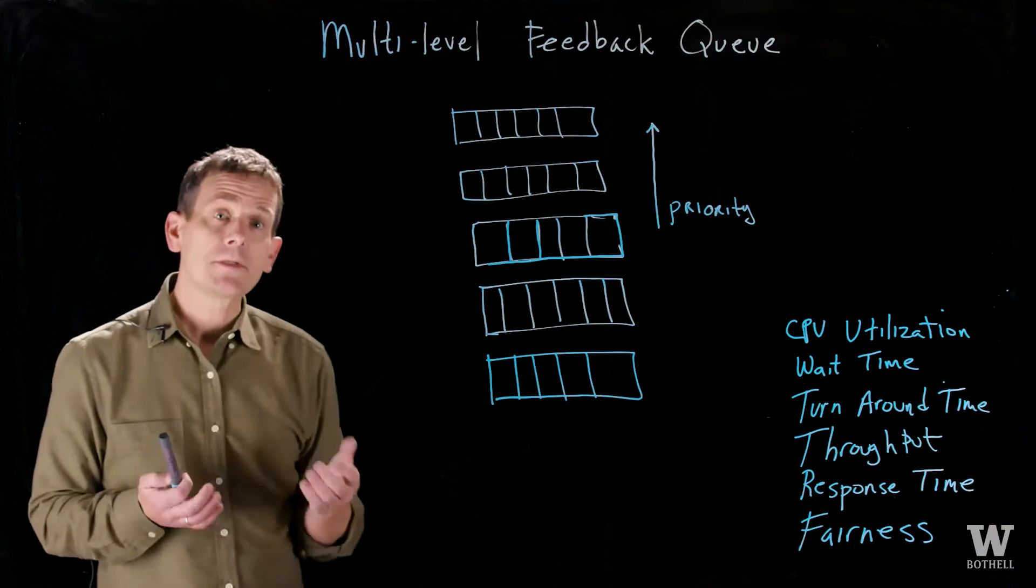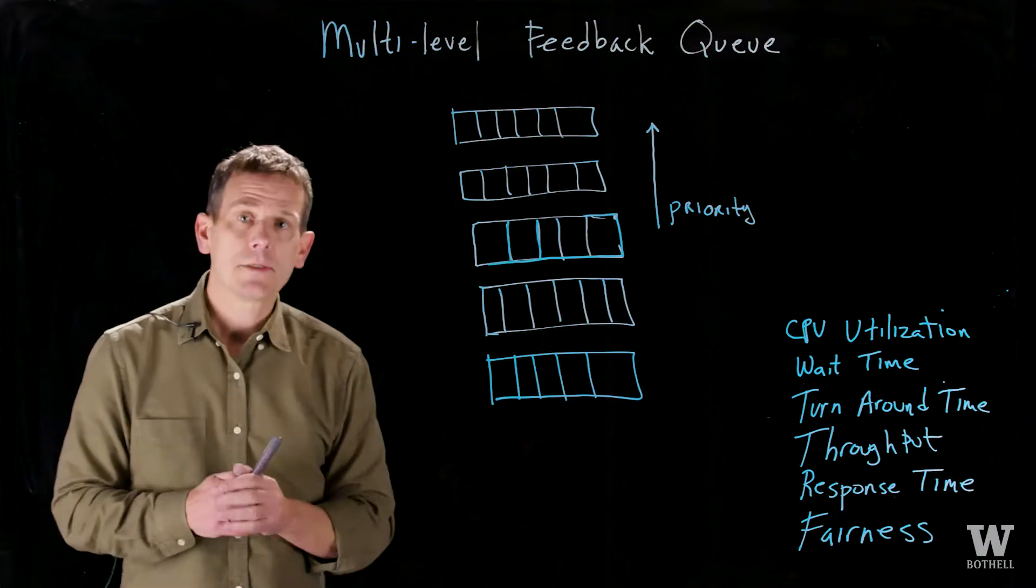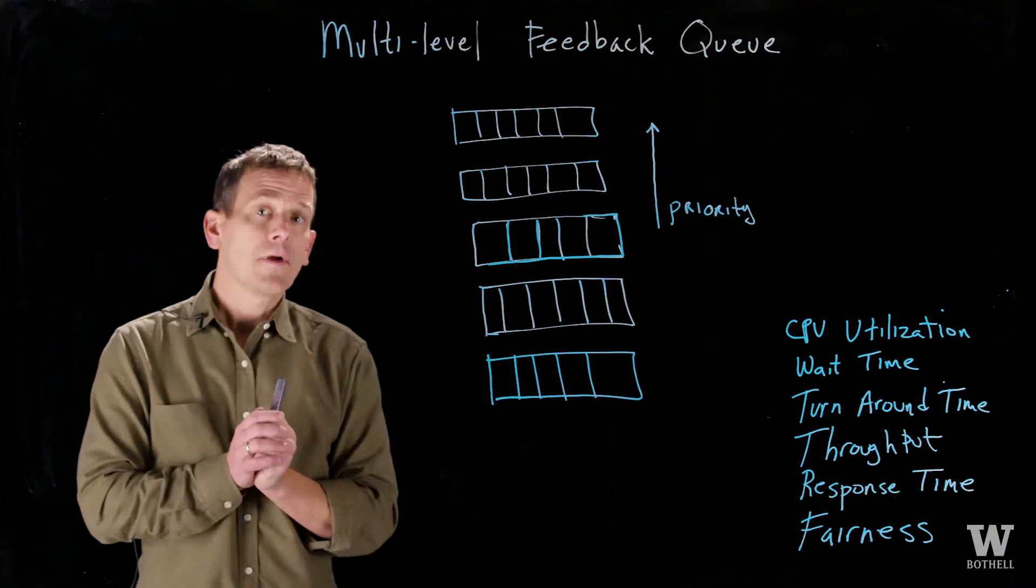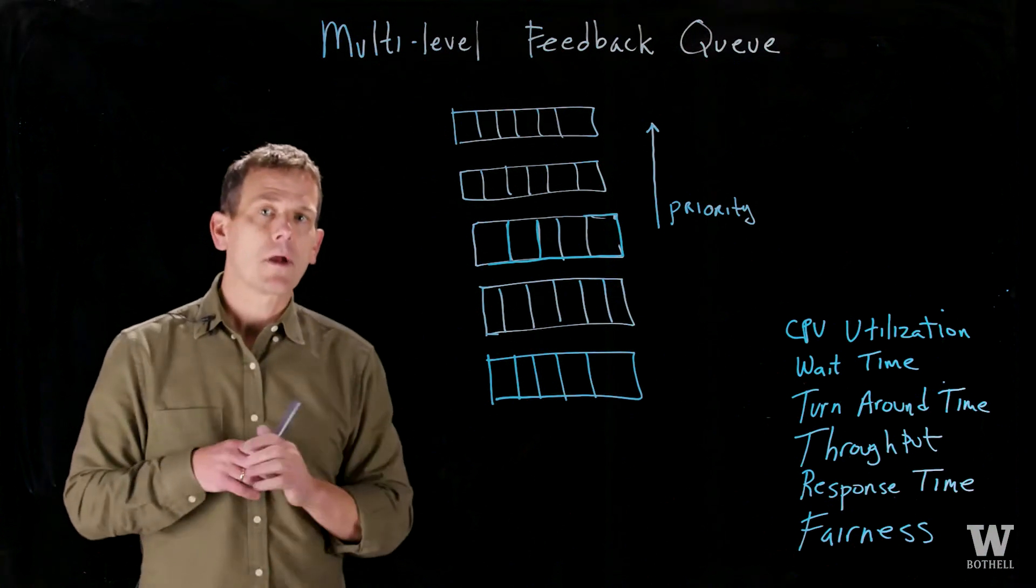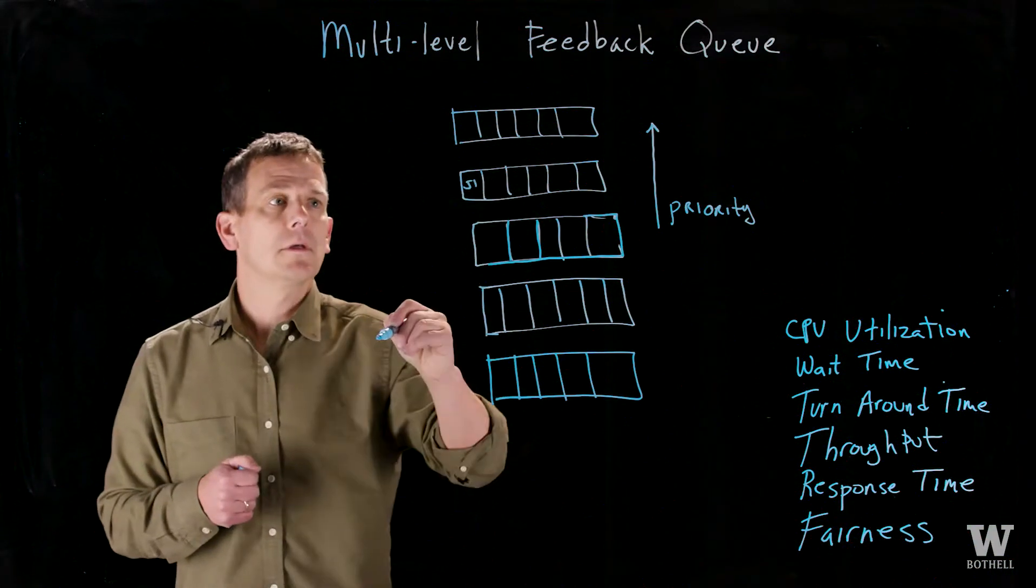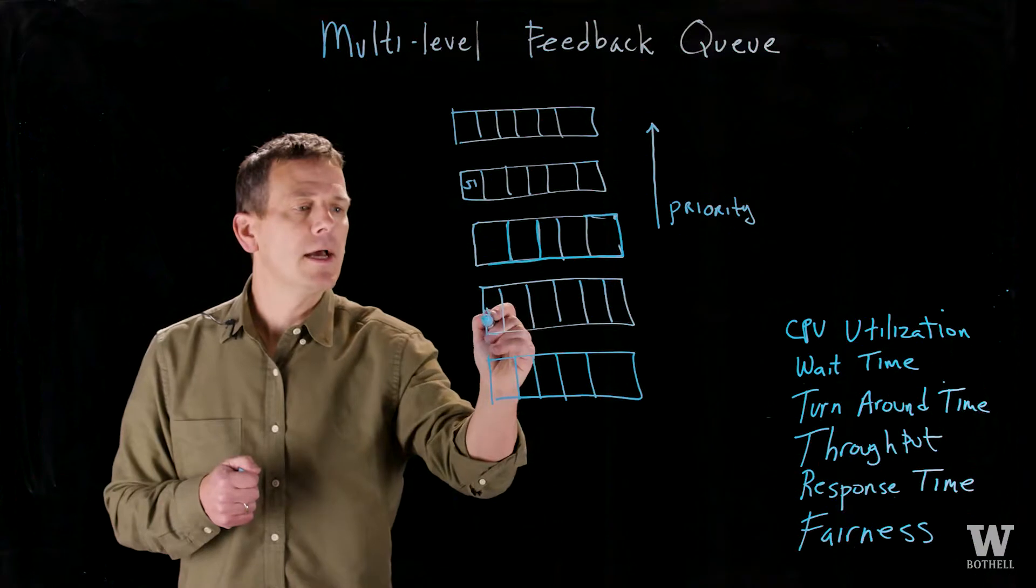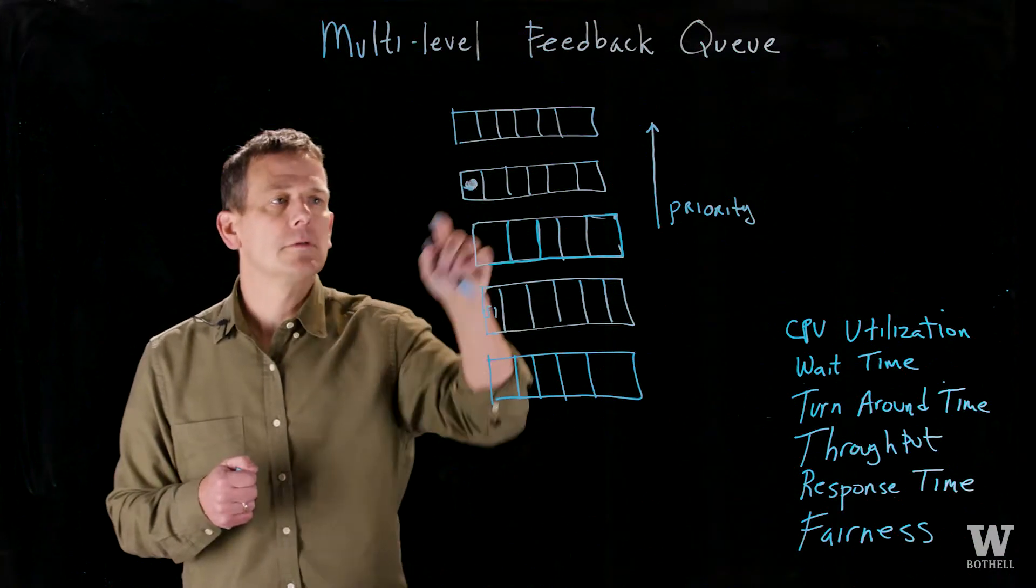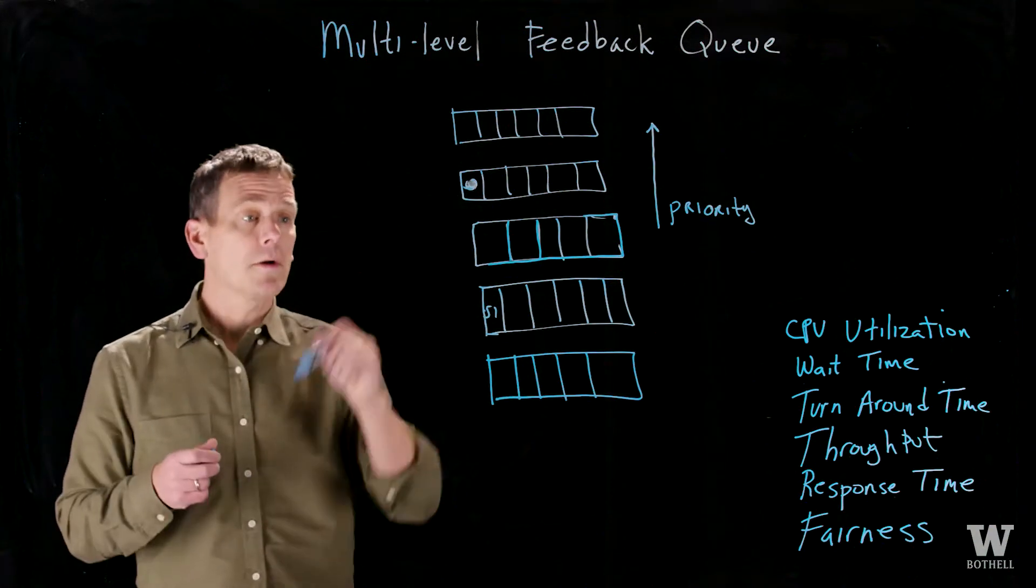For instance, if it sees that the job is using a lot of CPU, it may say, for fairness reasons, I'm going to drop the priority a little bit. And so the job may start up in this queue here, and may get moved down a few swaps after, a few priorities after it runs.